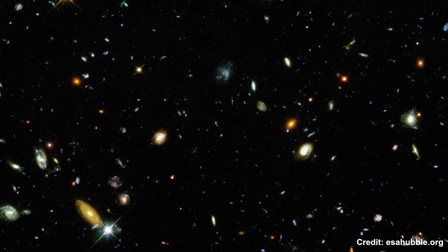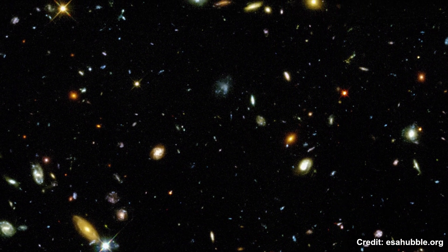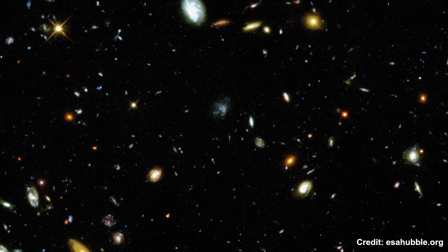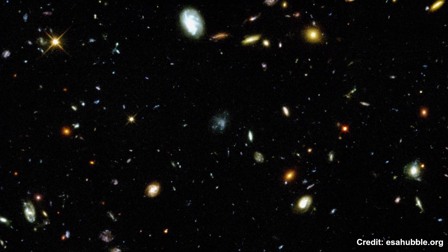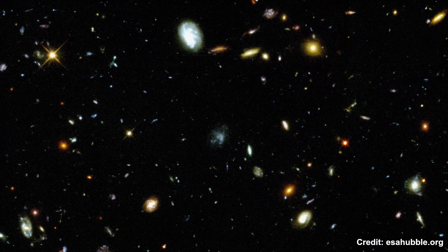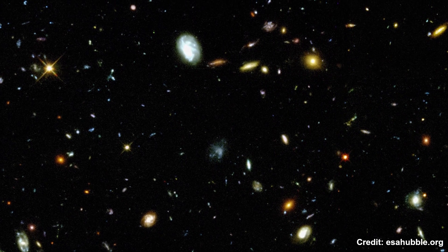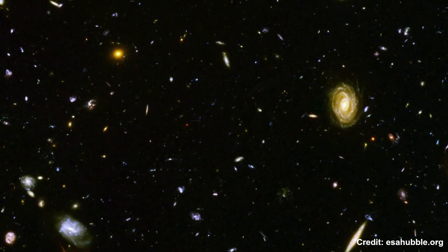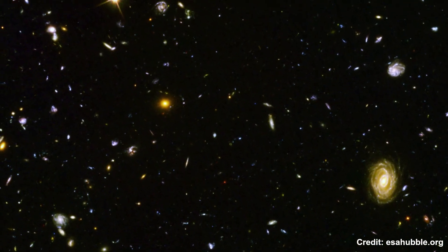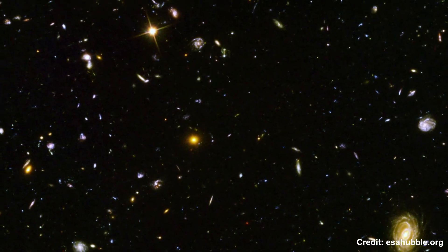This small image represented a tiny fraction of the night sky, yet it unveiled a universe far more crowded with galaxies than anyone had imagined. By extrapolating from this data, astronomers estimated that the observable universe contains approximately 100 billion galaxies. But that estimate was just the beginning.